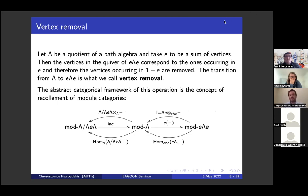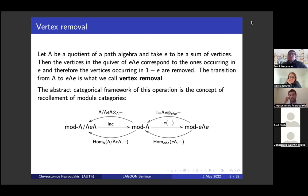Let's start with vertex removal. Lambda is again a quotient of a path algebra, and take E to be a sum of vertices. If you pass to E·lambda·E, this algebra corresponds to the vertices that occur in E, and therefore the vertices 1 minus E are removed. The transition from lambda to E·lambda·E is what we call vertex removal. Since I want to compare the finitistic dimension, Gorenstein property, and all these homological invariants, I need to know how the module categories of these algebras are related. Lambda and E·lambda·E are related by a recollement of module categories.